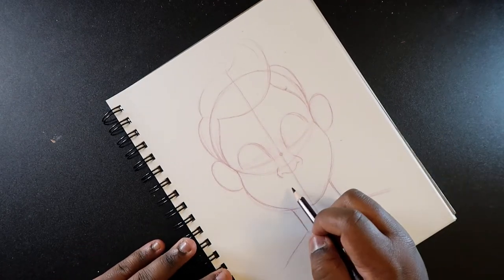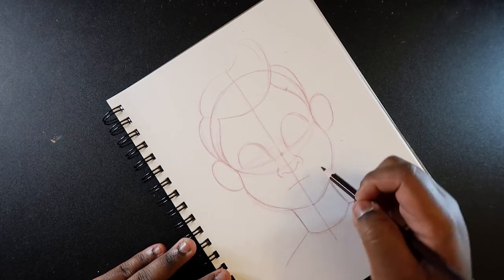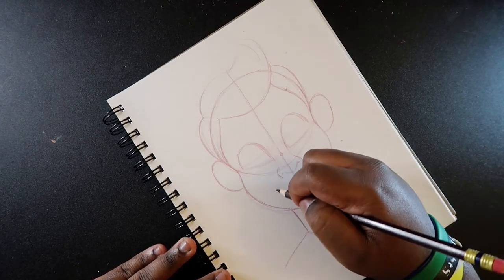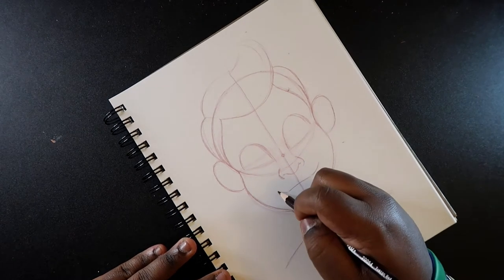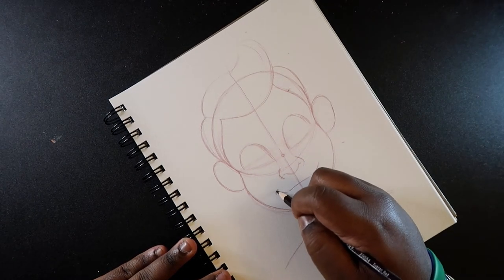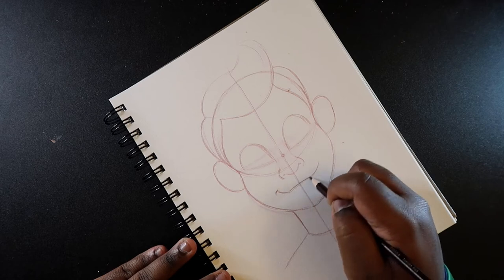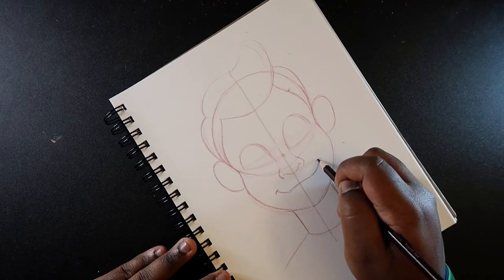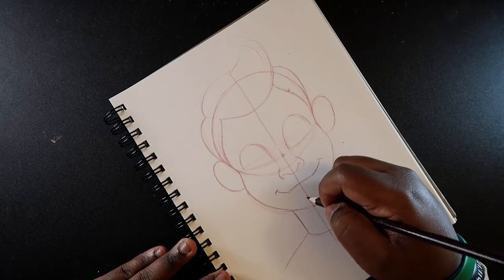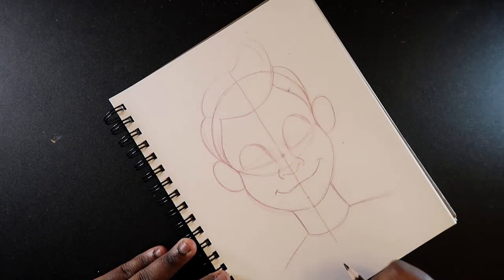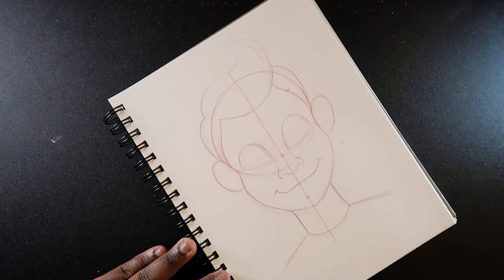For the mouth what I like to do is make a mouth sort of this shape. Give them a smile. Then a line down here resting on this center line for the chin, just a little short line like this.